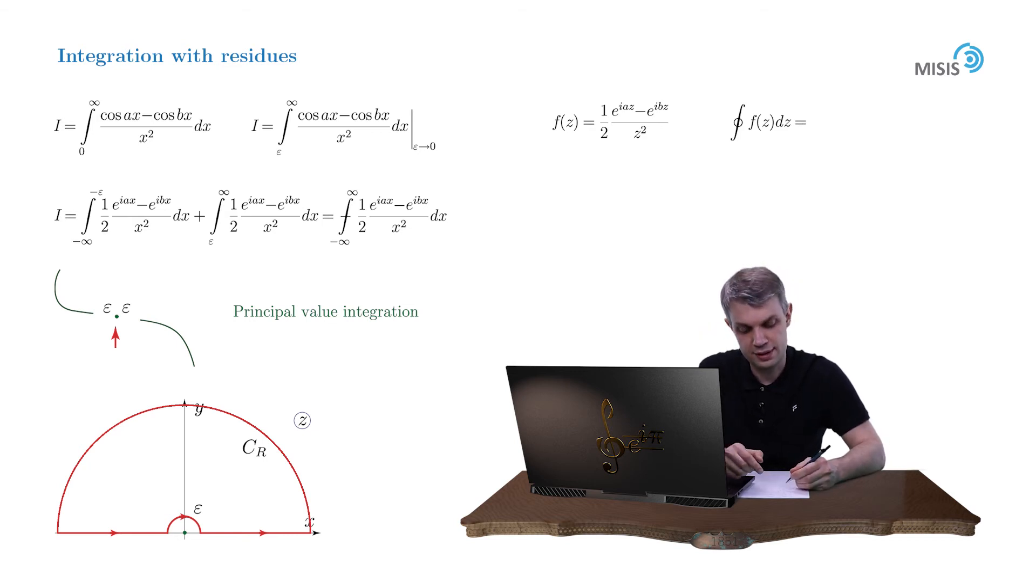Of course, this integral consists of our principal value integral, which is nothing but our initial integral, plus the integral along infinitesimal upper semicircle, and plus the integral along the upper infinite semicircle, CR. Due to Jordan's Lemma, this infinite semicircular integral tends to zero, if the radius of the circle tends to infinity. Because it's a combination of two exponentials with positive increments a and b, and pre-exponential function g of z, which is equal to 1 over z squared, tends to zero uniformly with respect to the argument of the complex number.